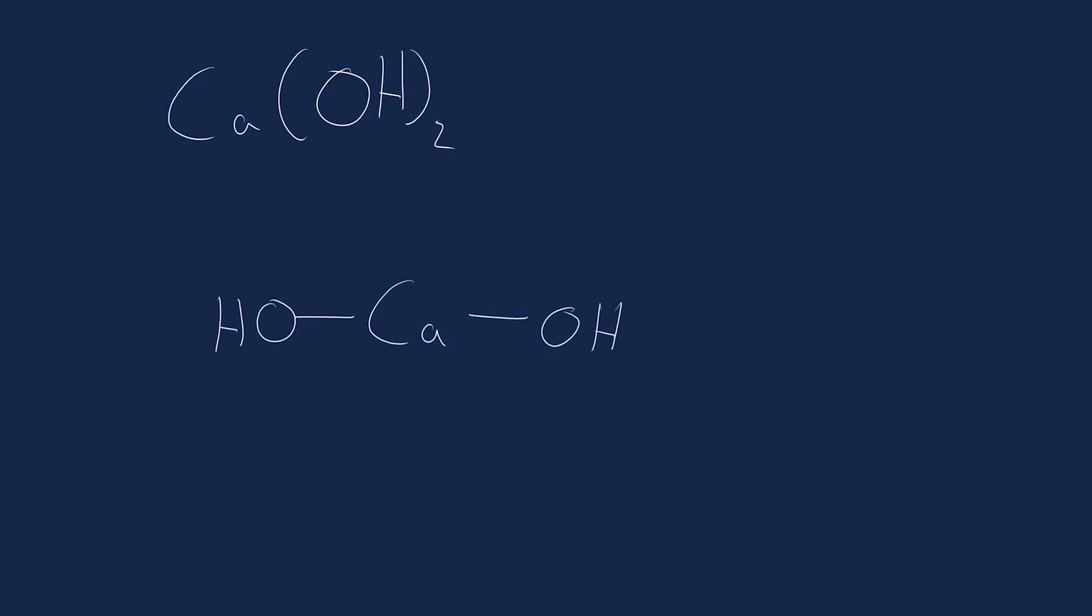What the brackets mean is we have one calcium and that calcium has two hydroxides next to it. Another way of looking at it, especially when balancing an equation, is that everything within the brackets, we have as many of those as the little number next to the brackets. So rather than one oxygen, we have two, and the same goes for hydrogen. That's in each molecule.